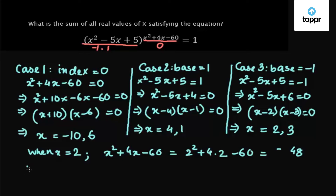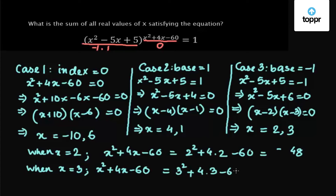When x = 3, the index is 3² + 4(3) - 60 = 9 + 12 - 60 = -39, which is odd. So (-1) raised to the power -39 is not equal to 1. Therefore, we reject x = 3.